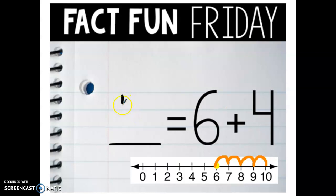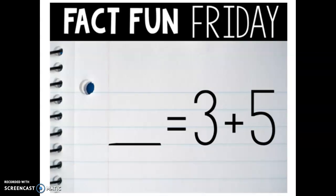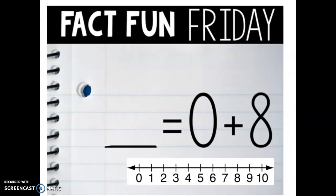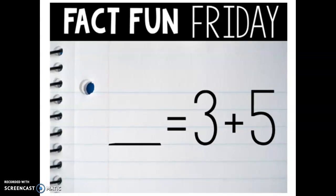So therefore, ten equals six plus four. So the missing number right here, our total, is ten. All right. Oh, we actually have two more. We'll just do one more right now with pictures.